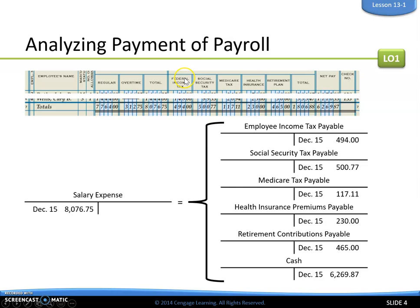One important thing to point out: federal income tax — when we credit that account, the name changes to Employee Income Tax Payable. So just be aware that federal income tax is recorded as Employee Income Tax Payable. We credit those accounts for their total deduction for all employees.